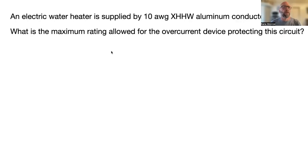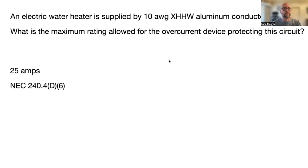Next question: an electric water heater is supplied by 10 AWG XHHW aluminum conductors — what is the maximum rating allowed for the overcurrent device protecting this circuit? Don't get caught up with all the extra information. The answer is 25 amps, found at NEC 240.4(D)(6). Make sure you highlight 240.4(D)(6) — 25 amps.